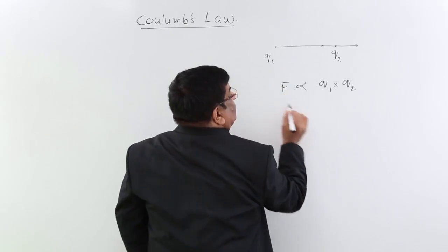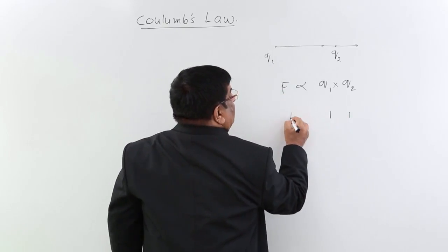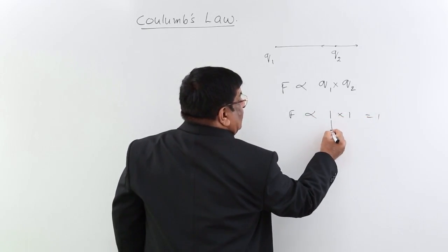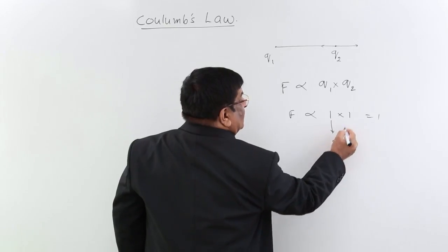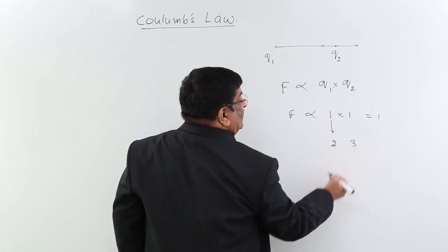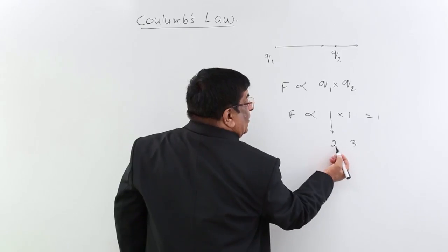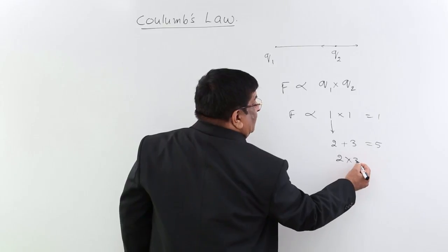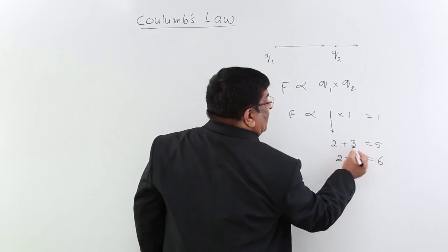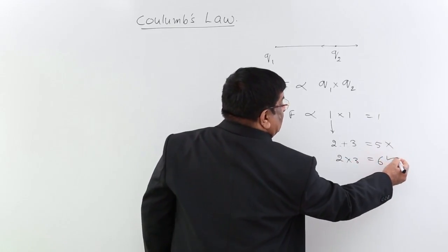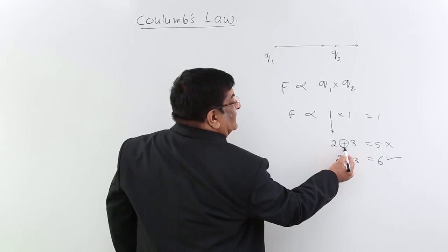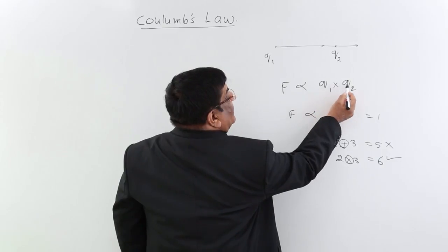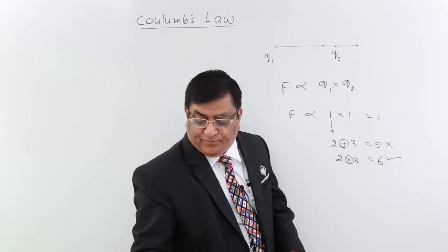That means if this charge is 1 and 1, the force is proportionate to 1 and if this charge we increase 2 times and this charge we increase 3 times, then the force will not be 2 plus 3, 5 times, but force will be 2 multiplied by 3, 6 times. So he did not choose plus, he chose multiplication. So Q1 multiplied by Q2, that is the force.